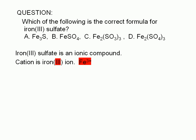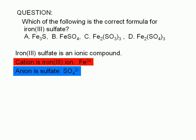The first part of the name of an ionic compound is the name of the cation. The rest of the name deals with the anion. In this case, it's sulfate. The formula of sulfate is SO4 with a negative 2 charge. This is something we look up, or better yet, memorize. At this point, we can eliminate choices A and C, as there is no SO4 group in either of these choices.